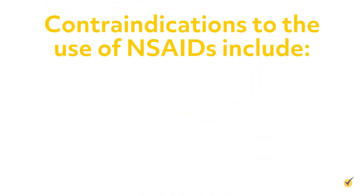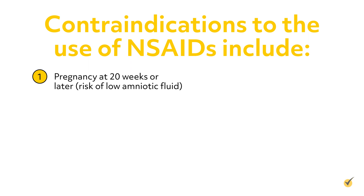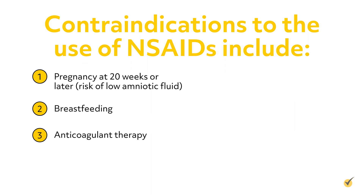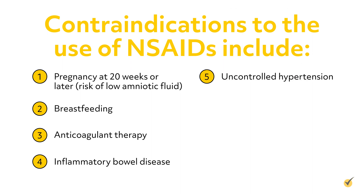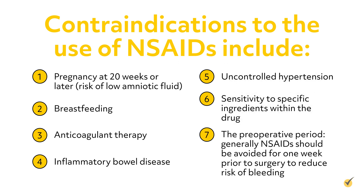Contraindications to the use of NSAIDs include pregnancy at 20 weeks or later due to risk of low amniotic fluid, breastfeeding, anticoagulant therapy, inflammatory bowel disease, uncontrolled hypertension, sensitivity to specific ingredients within the drug, and the preoperative period. Generally, NSAIDs should be avoided for one week prior to surgery to reduce the risk of bleeding.